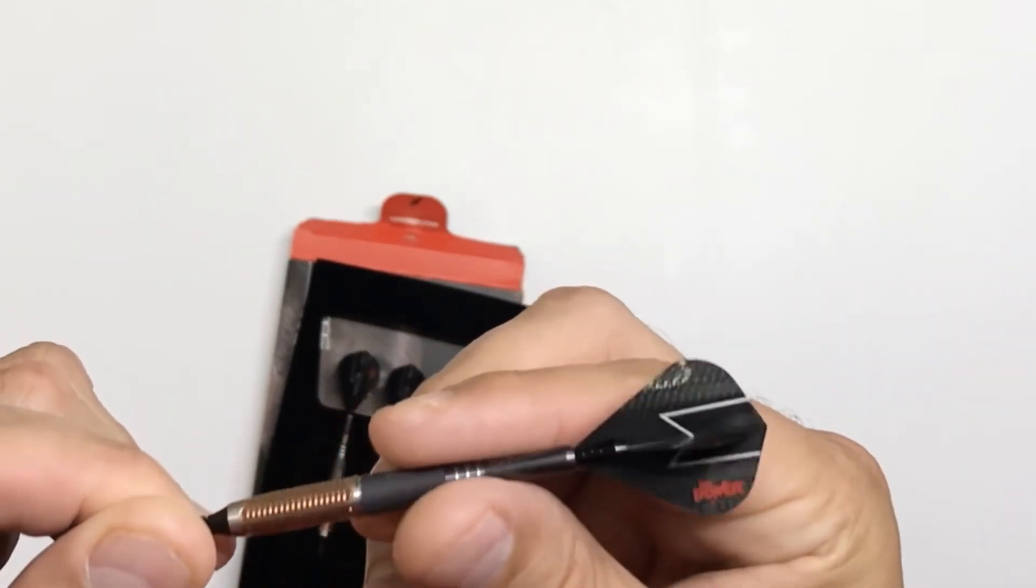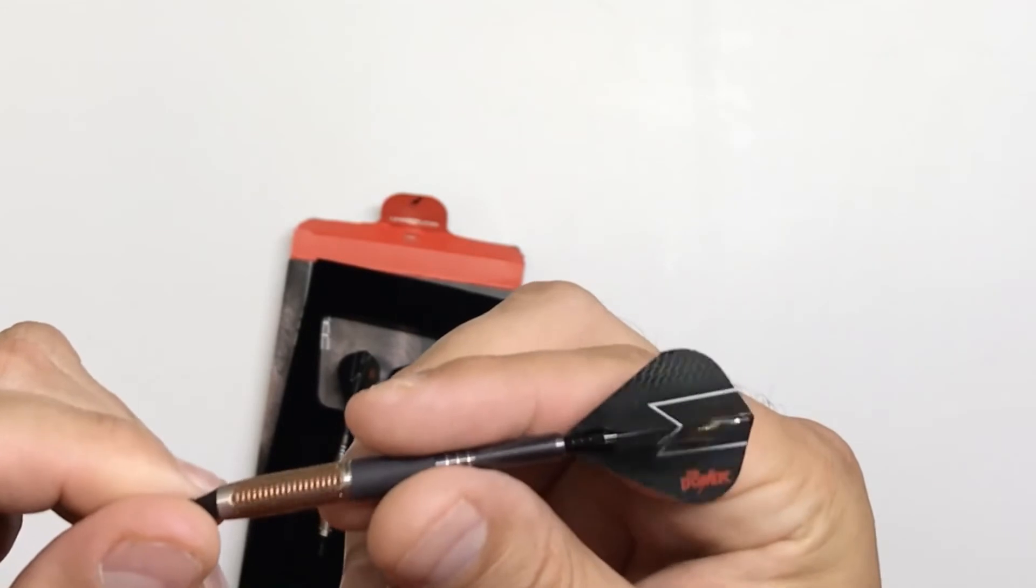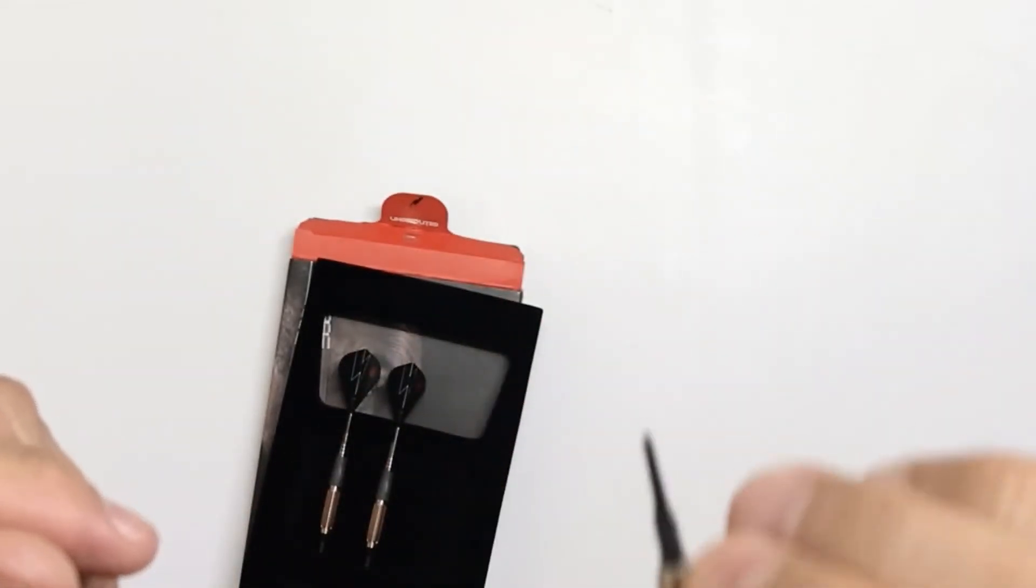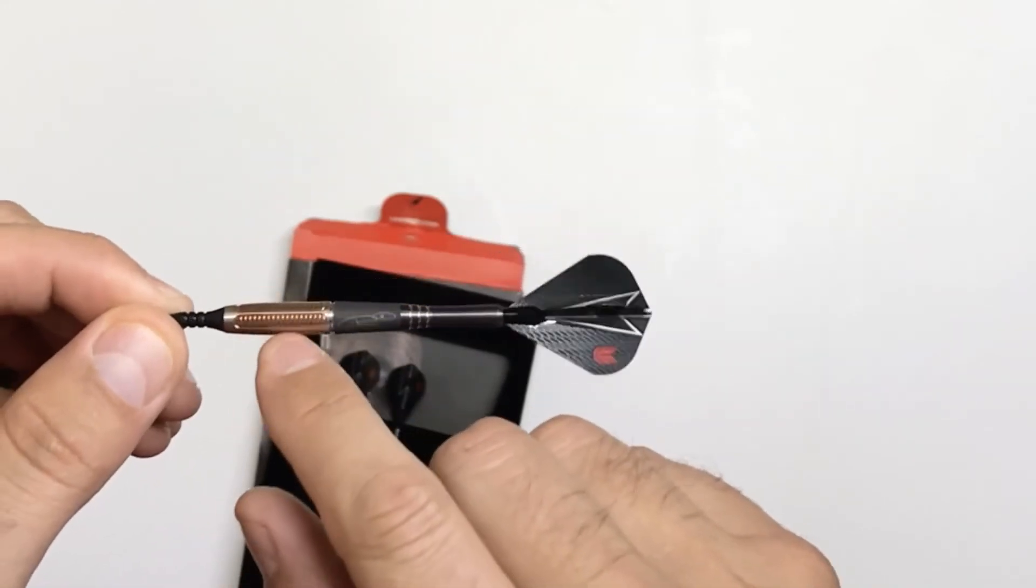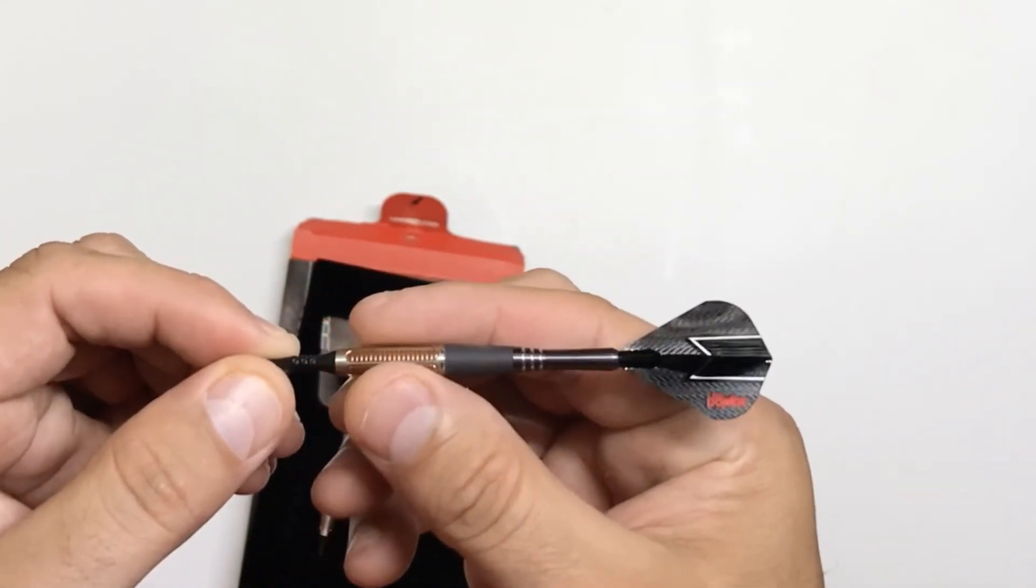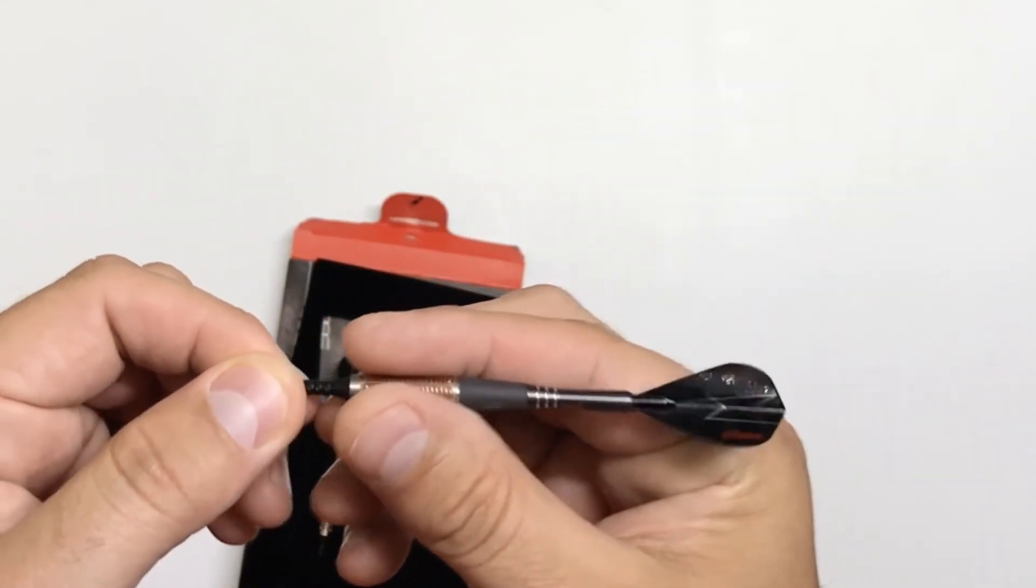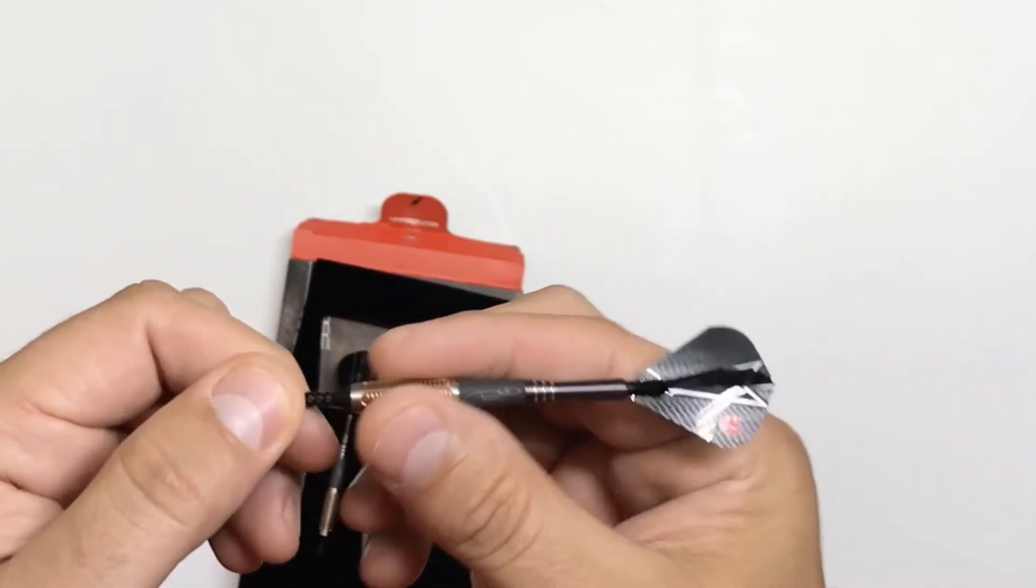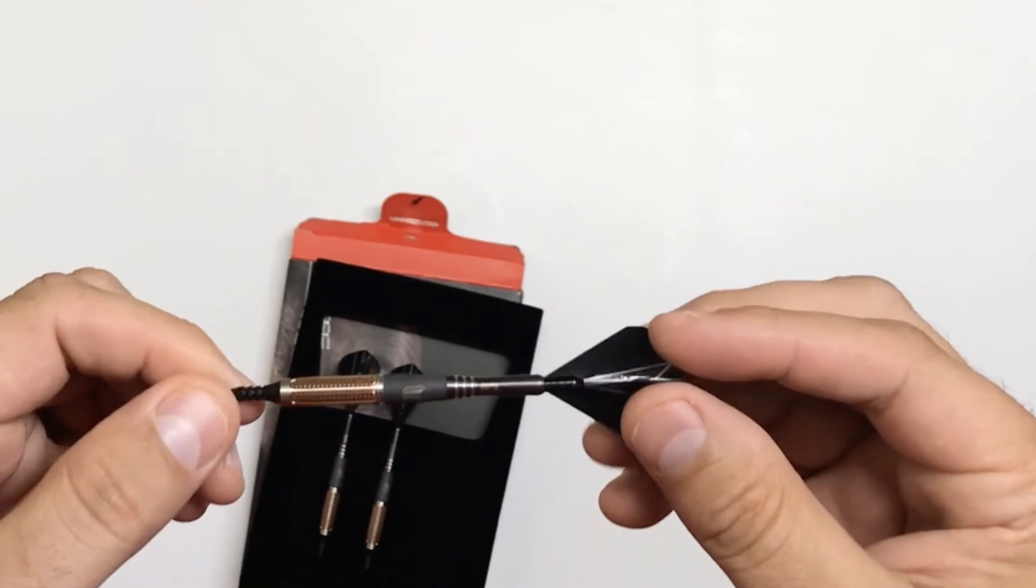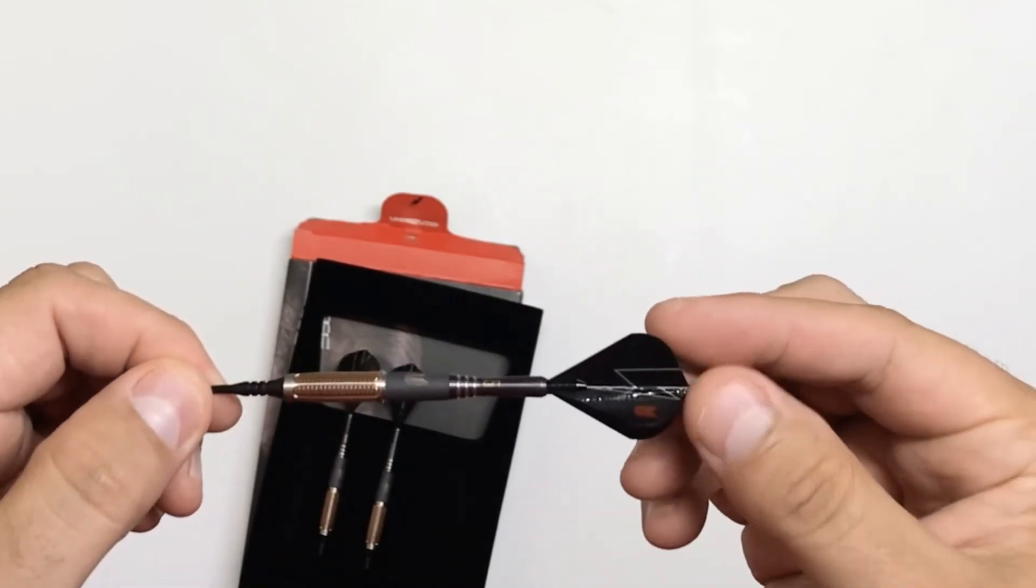It actually feels like to me it has more grip than the front here where the trapezoidal grips at. So on a scale probably one to ten on grip, I would probably give it about a three or a four honestly. It's not very aggressive.